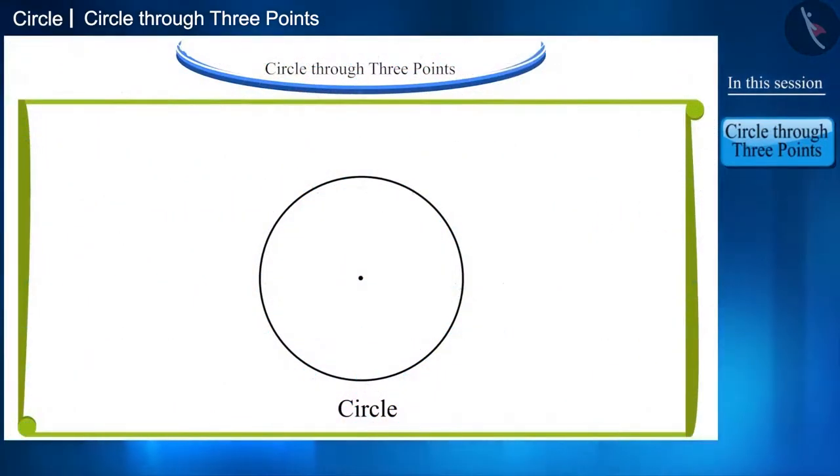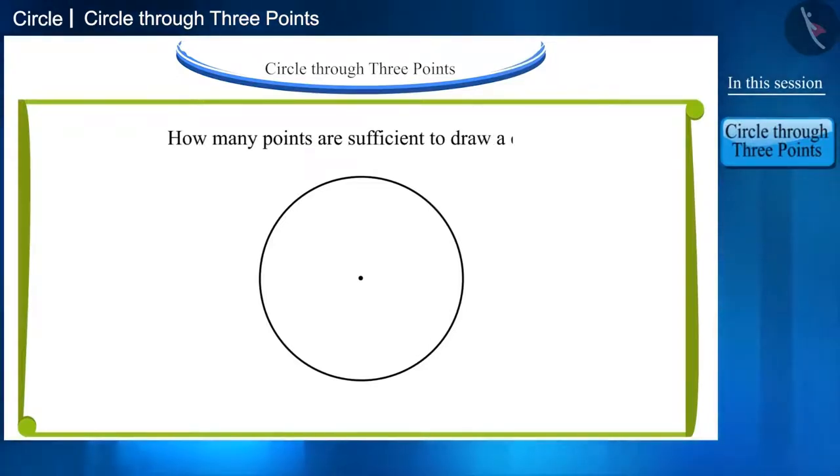According to the definition, a circle is a collection of all the points in a plane which are equidistant from a fixed point in the plane and there are infinite points on the circle.